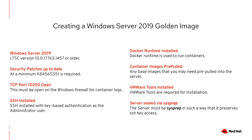On the Windows firewall, you need to open TCP port 10250 in order for the container logs to pass through. SSH needs to be installed and configured to start on boot. Also, key-based authentication needs to be in place for the Windows administrator user, meaning you should be able to SSH into the Windows node as administrator using key-based SSH authentication without a password. Docker runtime needs to be installed. Note that in future versions, containerd will be used as a runtime, but for now, install Docker.